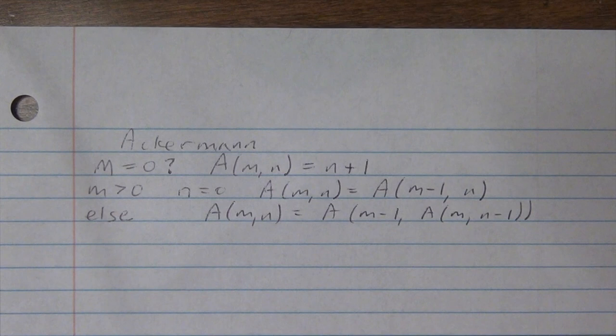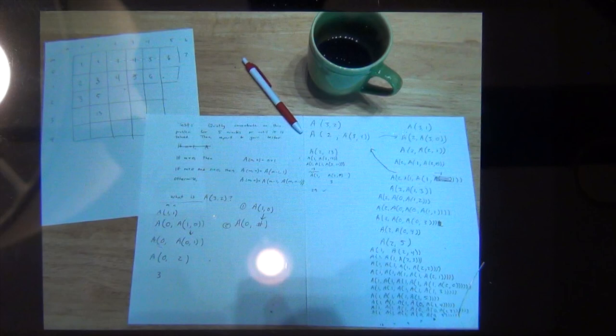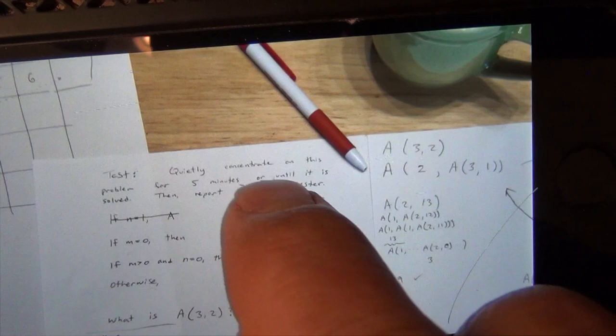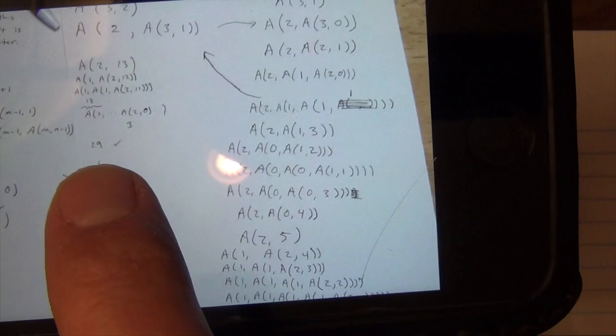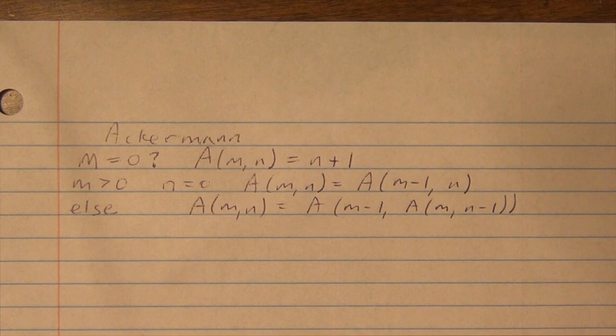It grows very quickly. I have an image here where I solved it for a particular number, and you can see in the upper left I have a table. For the smaller numbers it's small, and then I did some work to figure out the pattern and found some repetition. All you really need to know is the basics.